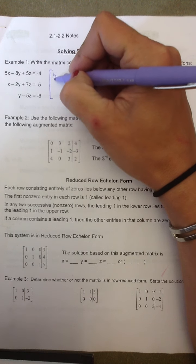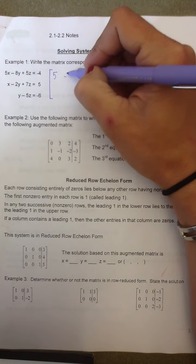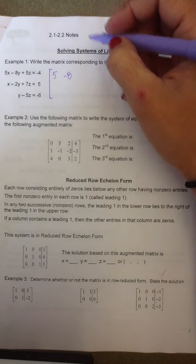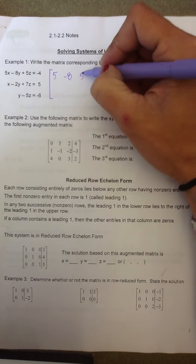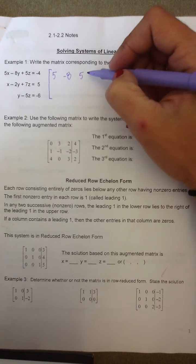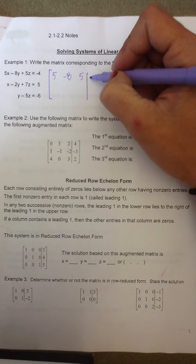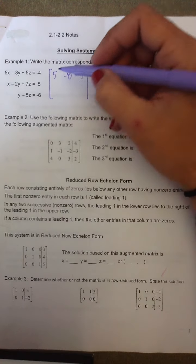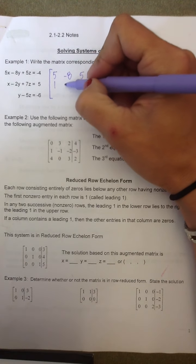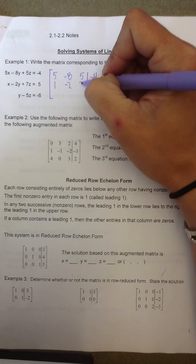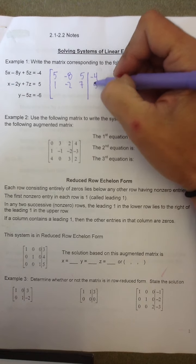So the first coefficient I have is 5, then negative 8. Notice I'm keeping the sign attached. 5 is the next. And then we draw a vertical line to represent all of the equal signs and continue copying the numbers. So the second row will be 1, negative 2, 7, and 5.